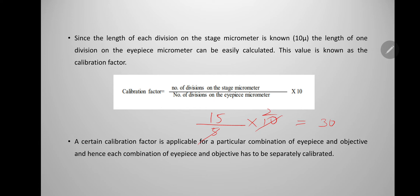The calibration factor for the example is 30 microns. A certain calibration factor is applicable only for a particular combination of eyepiece and objective, so each combination must be separately calibrated. If calibration was done at 10x, it cannot be used at 45x — the calibration must be redone and a new calibration factor used for that particular objective.